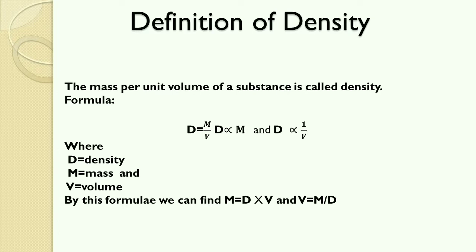The formula of density is: D = M/V, where D is the density, M is the mass, and V is the volume. By this formula we can also find mass and volume by rearranging. This formula is very important because it will be used in many numerical problems.